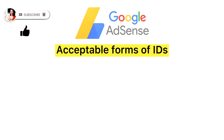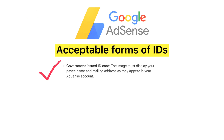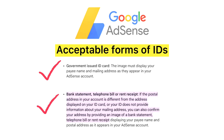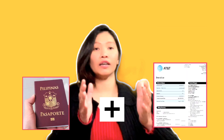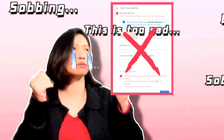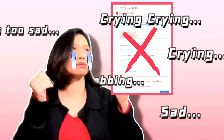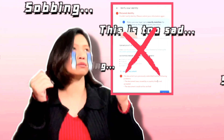You have to submit a government-issued ID card, bank statement, telephone bill, or rent receipt. In my case, I submitted my passport and a phone bill with my address on it, but unfortunately they did not accept it.